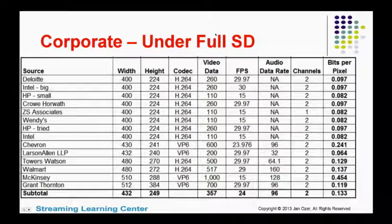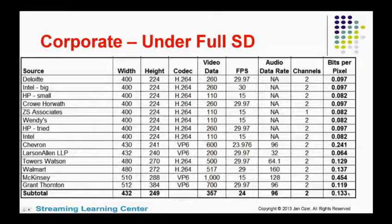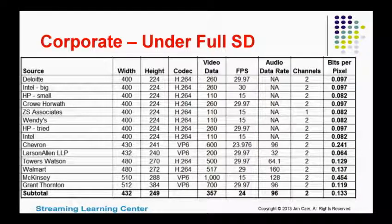This is all the video files under full SD — lower than 640 by 360 or 640 by 480. The bits per pixel value is at a pretty normal level, very close to what we saw for broadcast, at 0.133. We start to see some companies sub-sampling their videos from 29.97 down to 15 frames per second — maybe four or five companies out of 12 or 15 are using 15 frames per second as opposed to 30. And there's a much higher representation of H.264 compared to VP6.